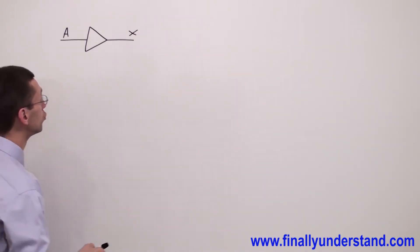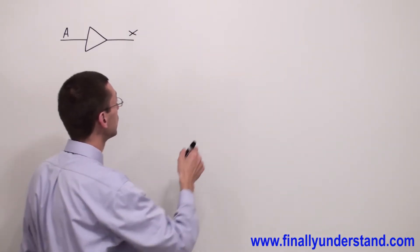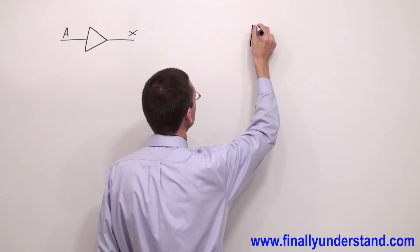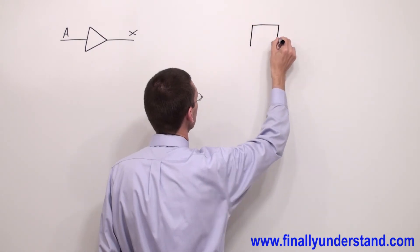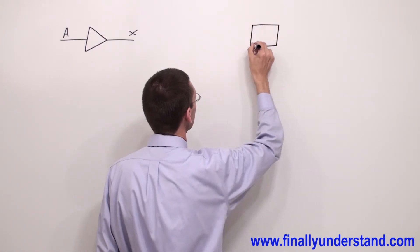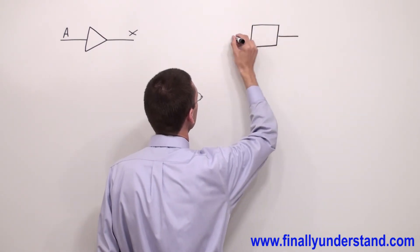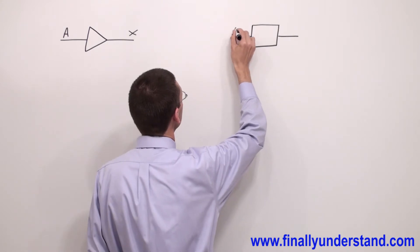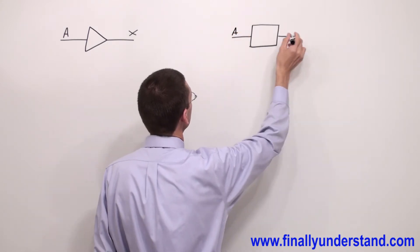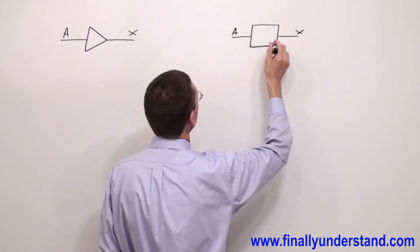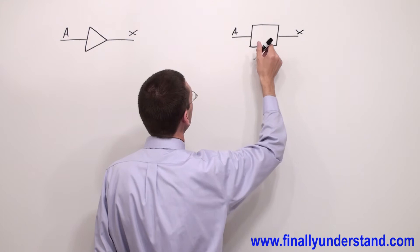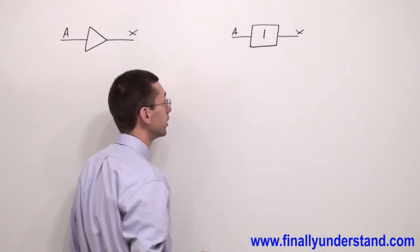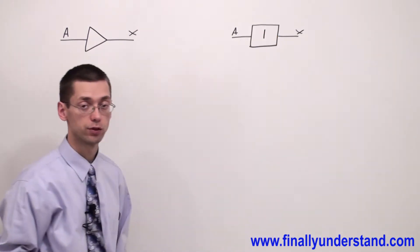If you want to draw a rectangular outline symbol, you are going to simply draw a square, and I'm going to have input A, output X, and qualifying symbol, which is simply 1.